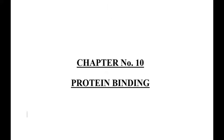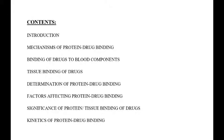In this chapter, the basic contents are: introduction, mechanism of protein drug binding, binding of drug to blood components, tissue binding of drugs, determination of protein drug binding, factors affecting protein drug binding, significance of protein tissue binding of the drug, and kinetics of the protein drug binding.